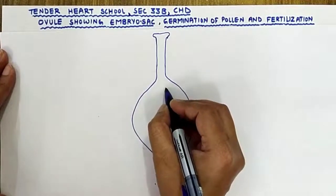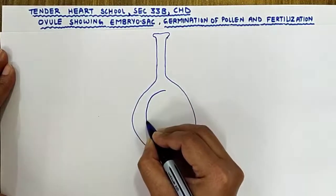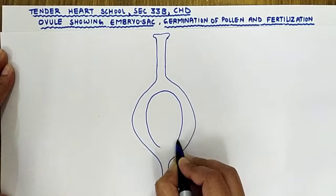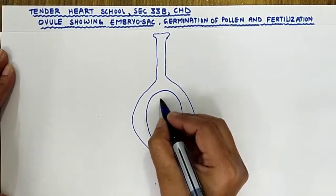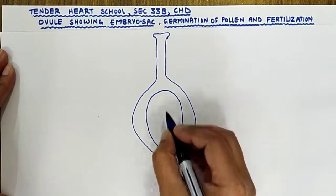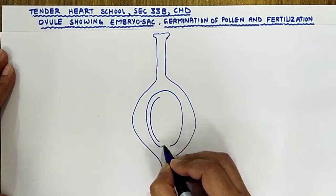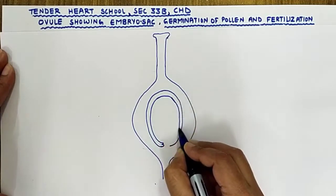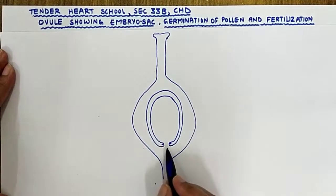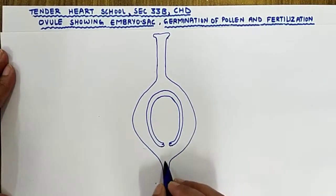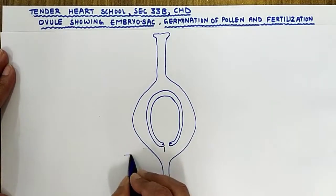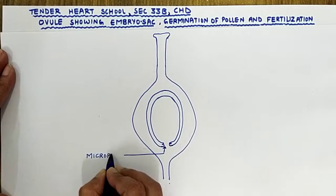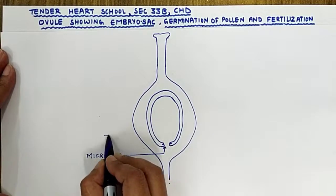Now inside the ovary we have the embryo sac. You can show the embryo sac. The embryo sac is the region in which we have the egg cell present — the female gamete. The embryo sac at the bottom, at the base, is having an opening, and this opening is called the micropyle. This is your embryo sac.